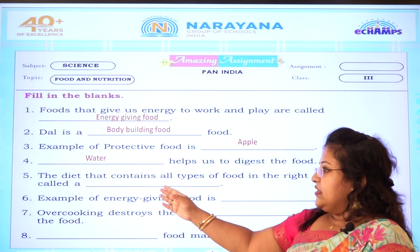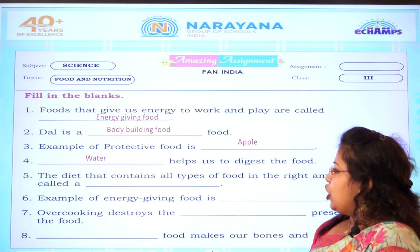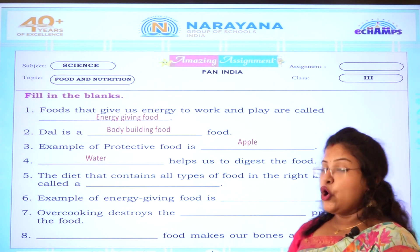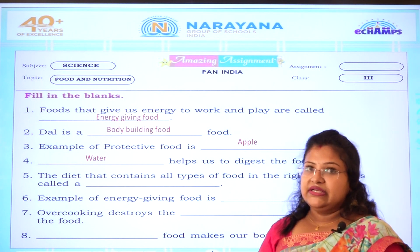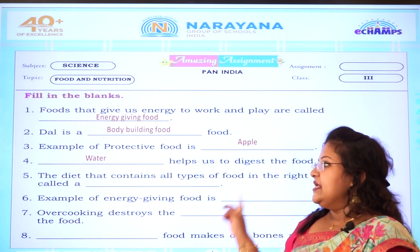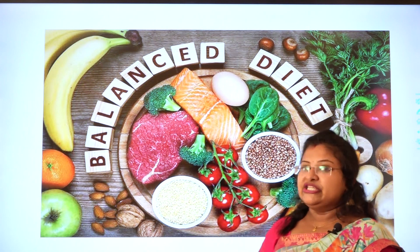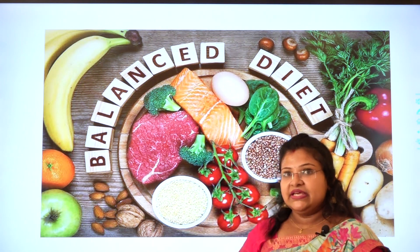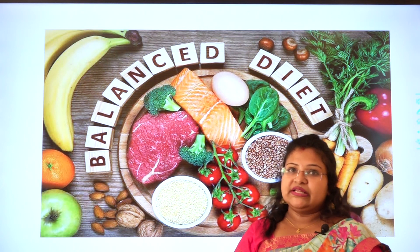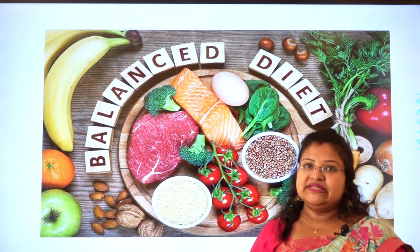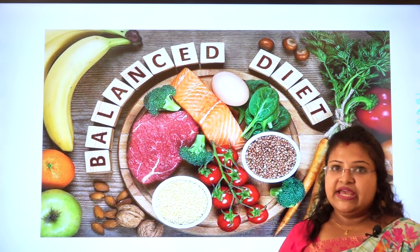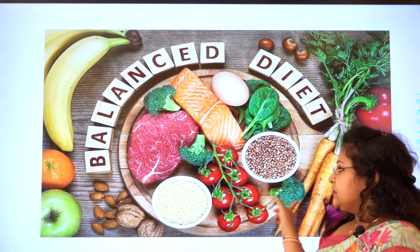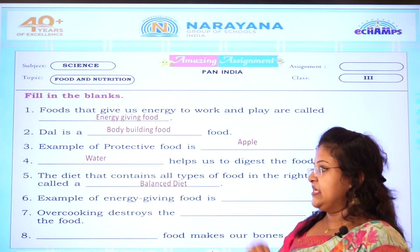Next one: the diet that contains all types of food in the right amount is called what? It is known as balanced diet. When all things are present in food in the right amount, it is known as balanced diet. So the answer will be balanced diet.